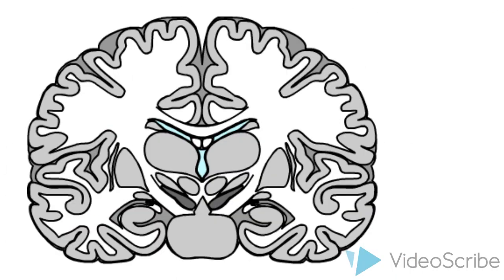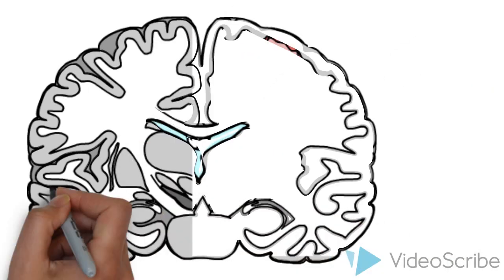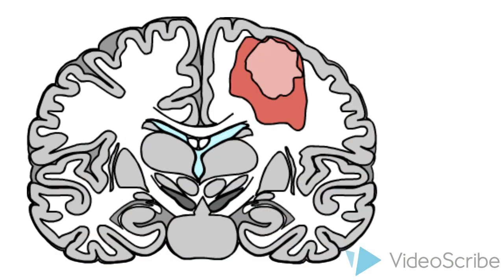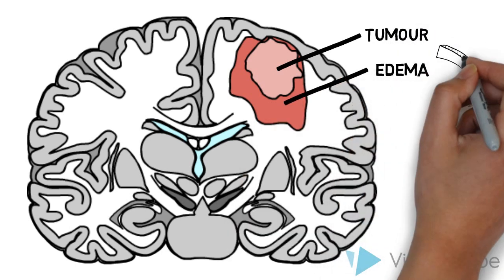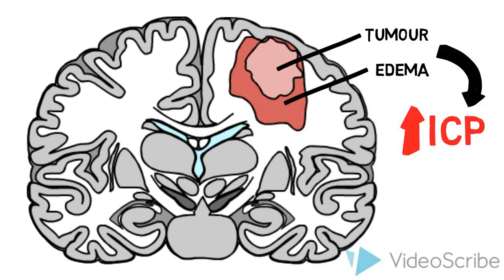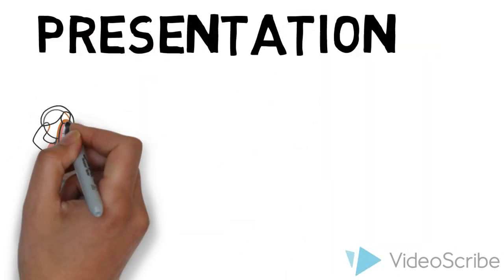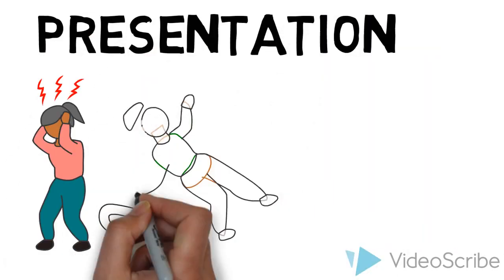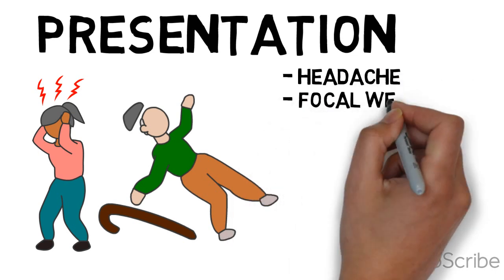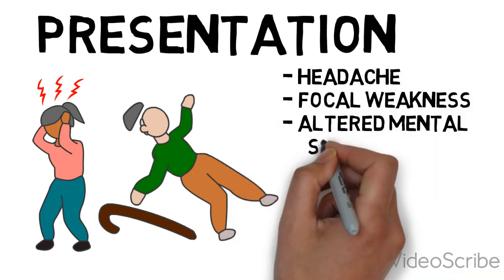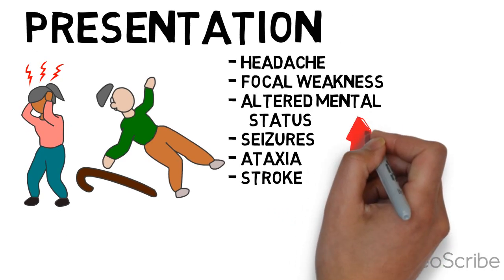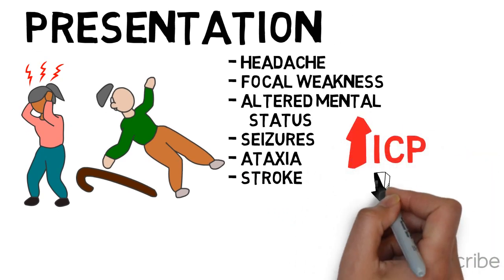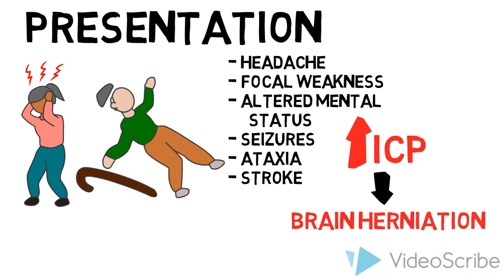Brain metastases mainly cause symptoms from the direct effect of the mass, as well as from the edema surrounding the mass. The tumor and its surrounding edema can lead to increased intracranial pressure. Patients may present with headache, focal weakness, altered mental status, seizures, ataxia, and stroke, as well as complications of increased intracranial pressure such as brain herniation.